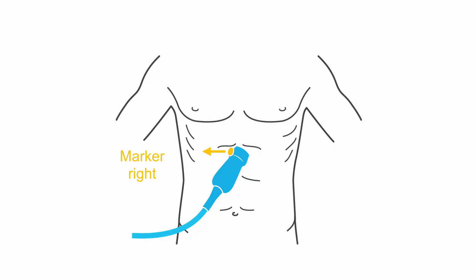The next view we're going to review is the sub-xiphoid view. Here, you're going to bring your phased array probe underneath your patient's xiphoid process, with the indicator to your patient's right. Tuck the probe underneath the xiphoid process — it will actually help to place your index finger on top of the probe and, using your palm, flatten out the probe and push it up towards the xiphoid process, looking into the chest cavity.